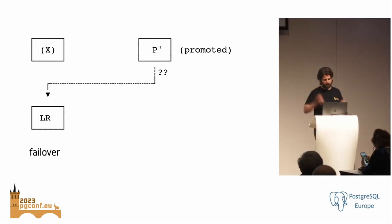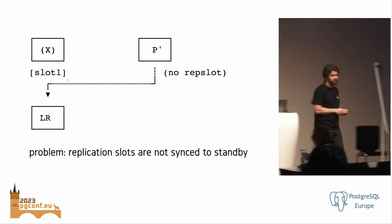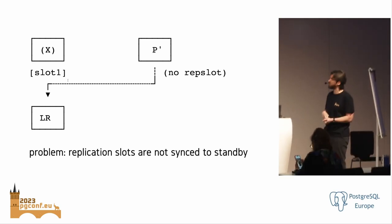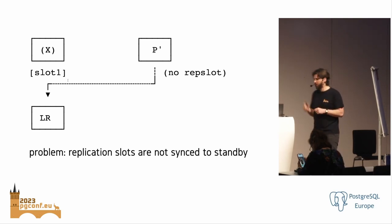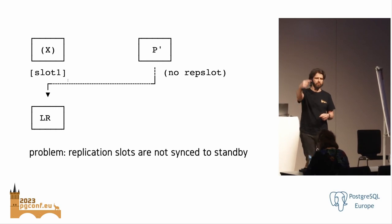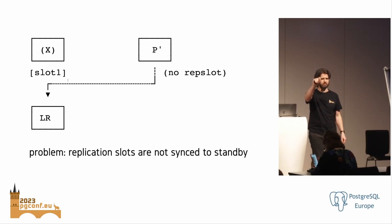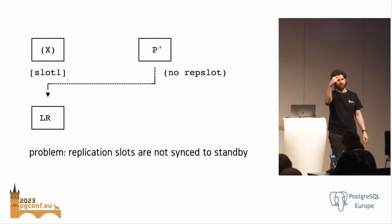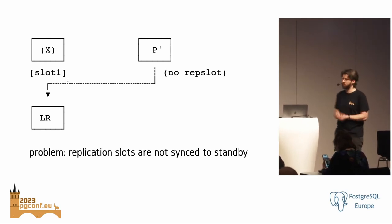The reason it doesn't work is replication slots. A replication slot is basically a way for a replication receiver to register themselves with the provider and say 'I want to replicate.' That tells the provider to keep track of what the receiver has already received and processed. That's the purpose of a replication slot.